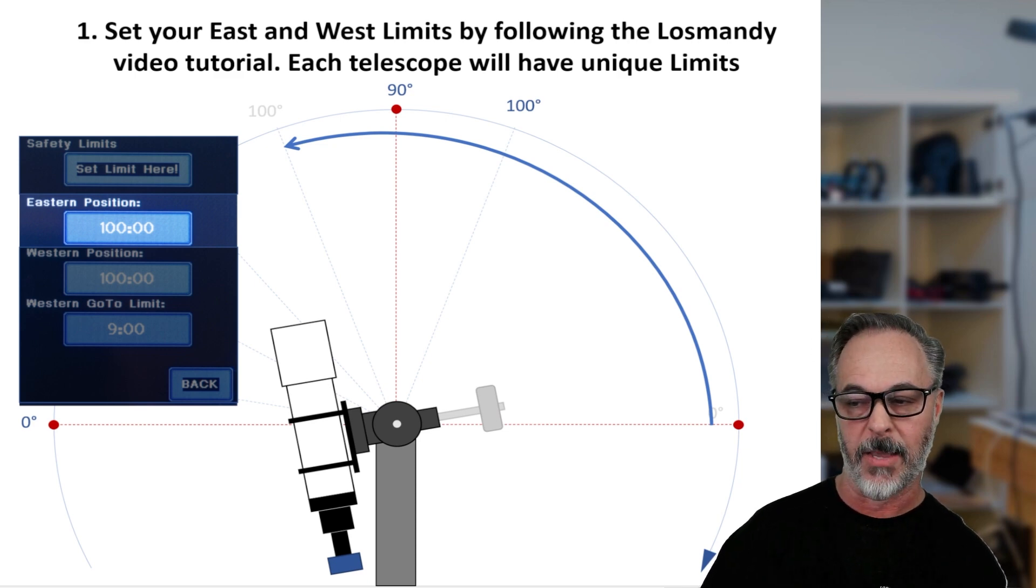But in this example, we're going to set an eastern limit at 100 degrees. And that's measured from zero degrees on the western horizon. In the actual setting of this, all you do is you just simply slew it and then you press the button set limit here.